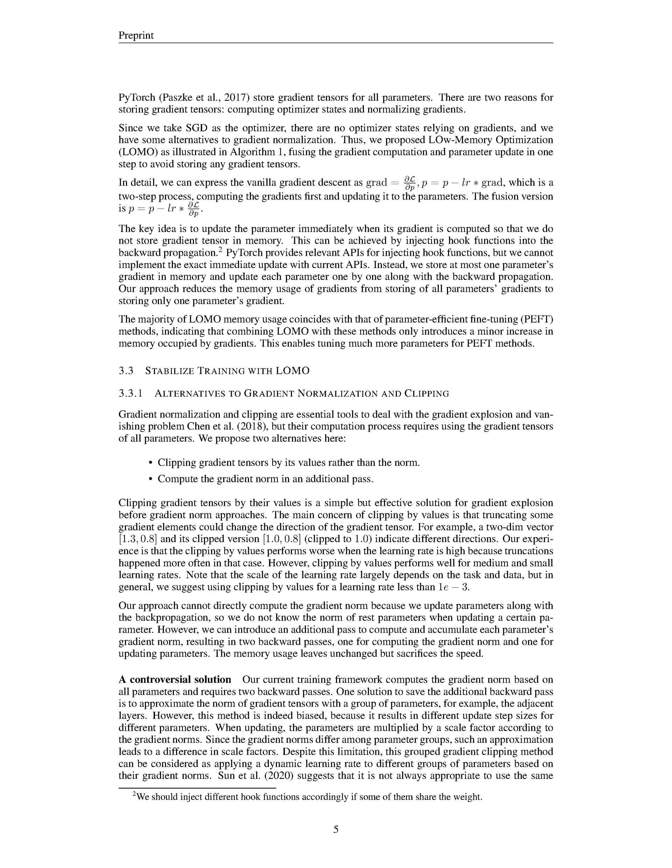The second approach involves an additional computational step to evaluate and accumulate each parameter's gradient norm. This process does not directly calculate the gradient norm since we update parameters in tandem with the backpropagation, which leaves us without the norm of the remaining parameters when updating a certain one. Consequently, we need to implement two backward passes: the first one to calculate the gradient norm, and the second one for updating parameters. While this method doesn't increase memory usage, it does slow down the overall process due to the additional computational pass.